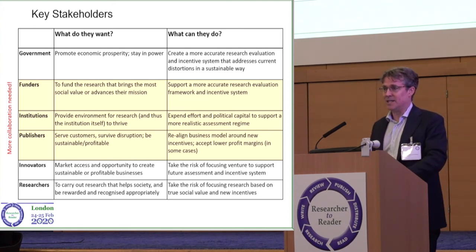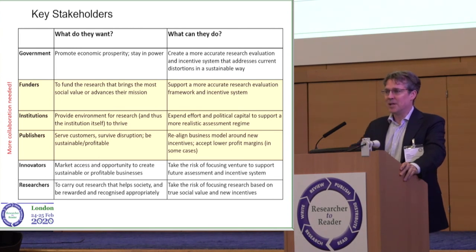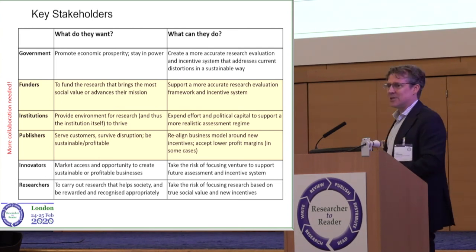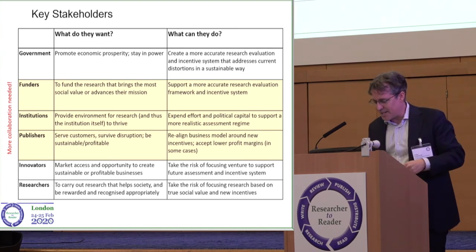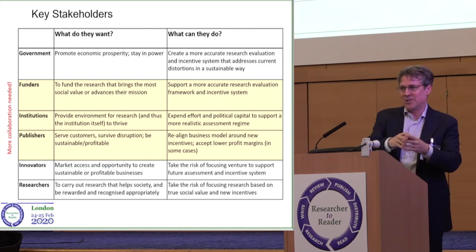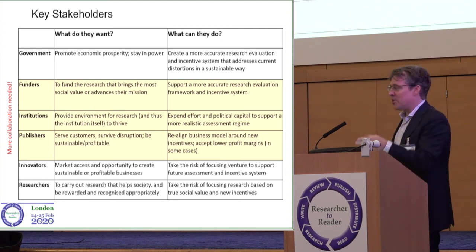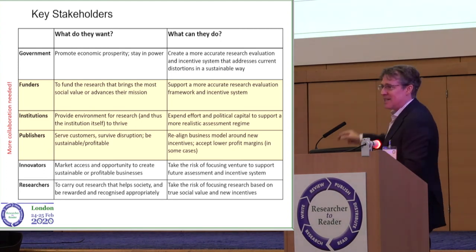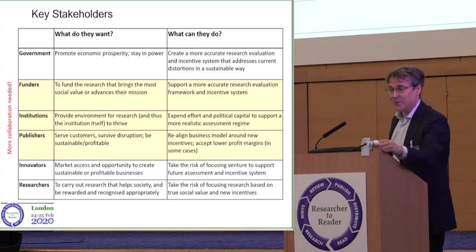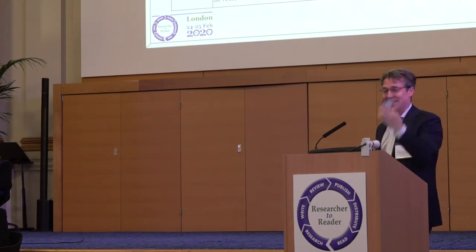Our output was a list — a partial one — covering government, funders, institutions, publishers, innovators, and researchers: what they're after and what they can do. They're listed by who has the most influence and is thus most responsible for change, starting with government. Having worked with Jonathan Adams and watched the REF, ERA, and recently China, I really do think government has an important role in pushing more accurate research evaluation and incentive systems. It was also clear that funders aren't listening enough to institutions and publishers, and vice versa — everybody needs to communicate more.